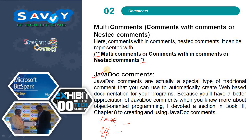Finally, there are javadoc comments. Javadoc comments are a special type of traditional comment that you can use to automatically create web-based documentation for your programs. You will have a better appreciation of javadoc comments when you know more about object-oriented programming — that is covered in a later session. This is how we define and represent javadoc comments. Thank you.